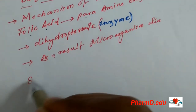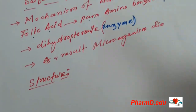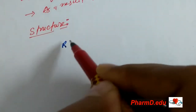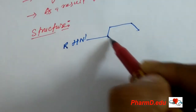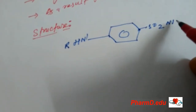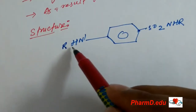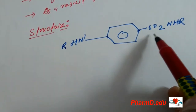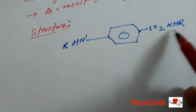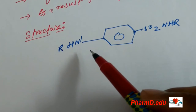I'm going to draw the structure of sulfonamides. It is very essential because it has various derivatives. This is the main format of the structure. The amino group is attached to the benzene ring, and this is the sulfonamide group. This amino group and sulfonamide group form the main structure of sulfonamides.